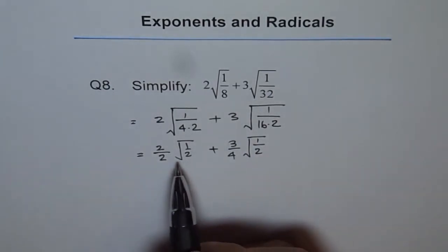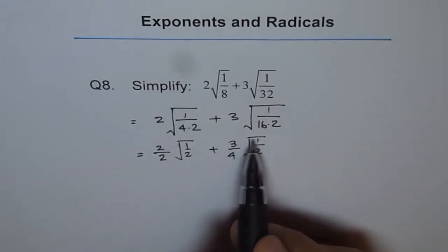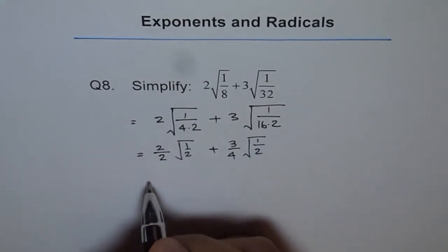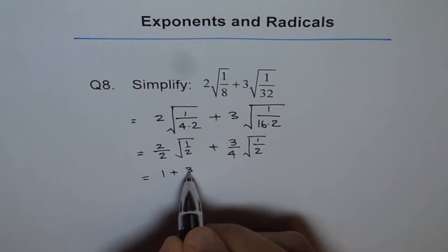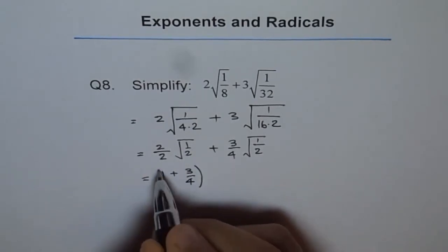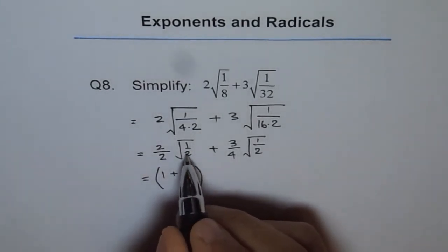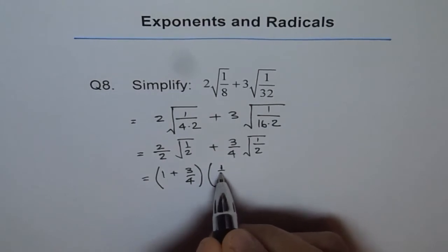Now these two are like terms, both of them have square root half, correct? So this could be written as 2 over 2 is 1. So 1 plus 3 over 4 within brackets, I take that common with 1 over square root 2.